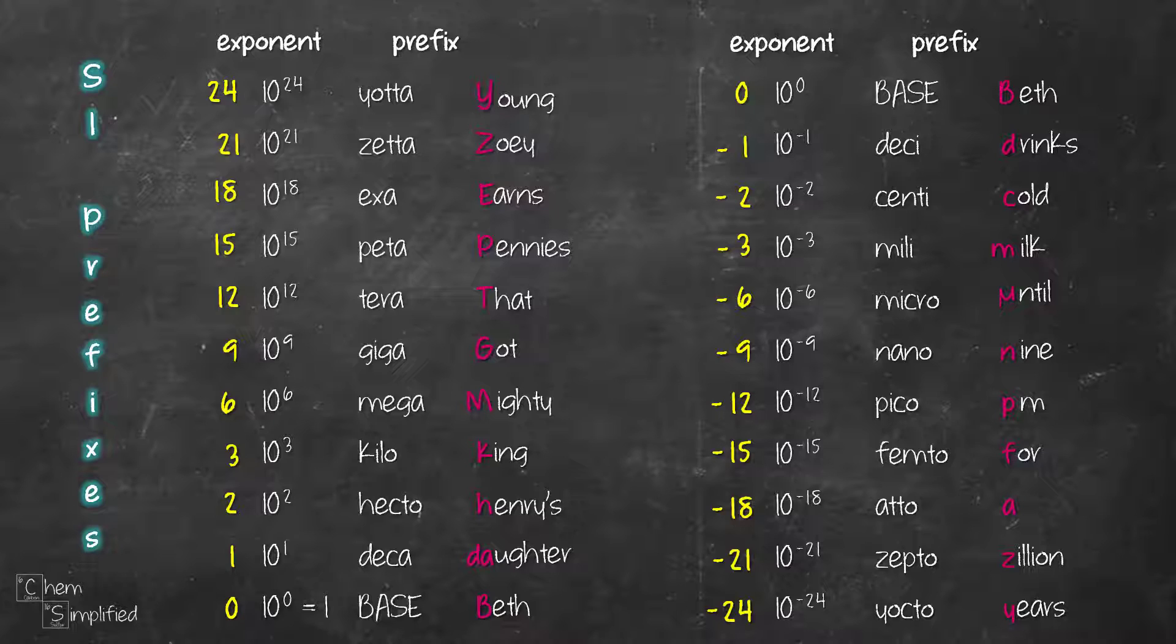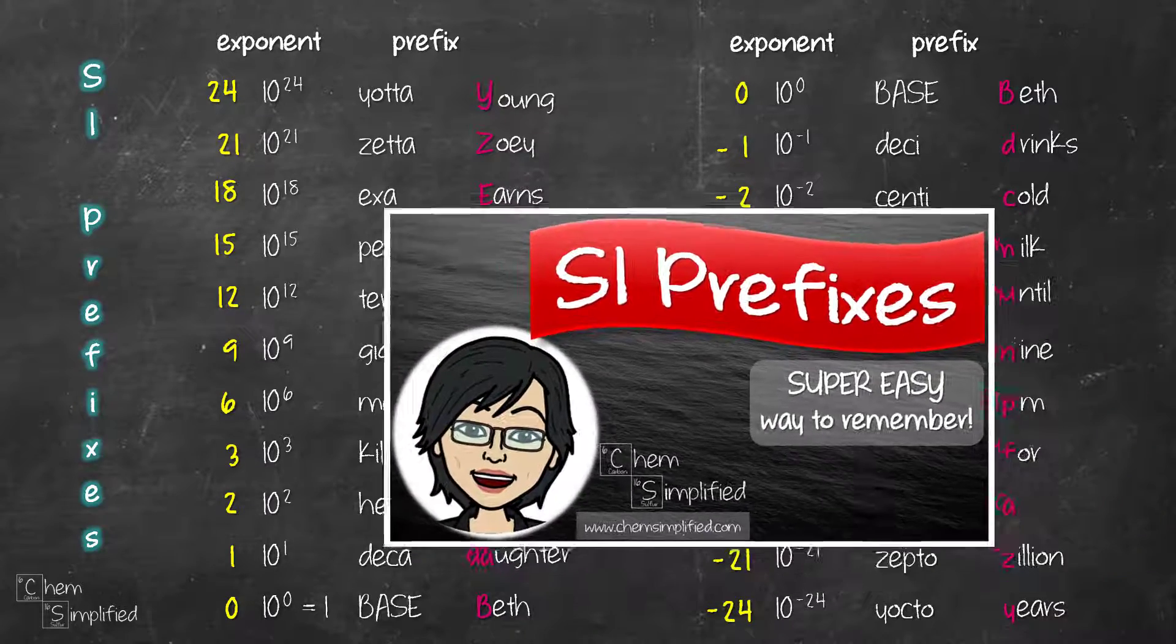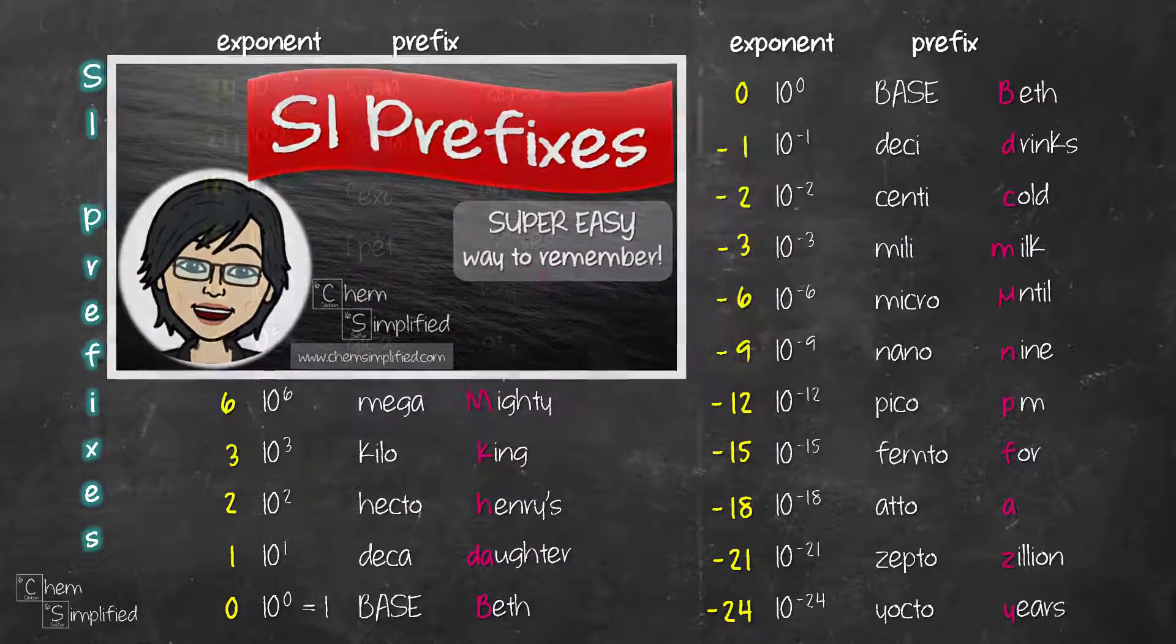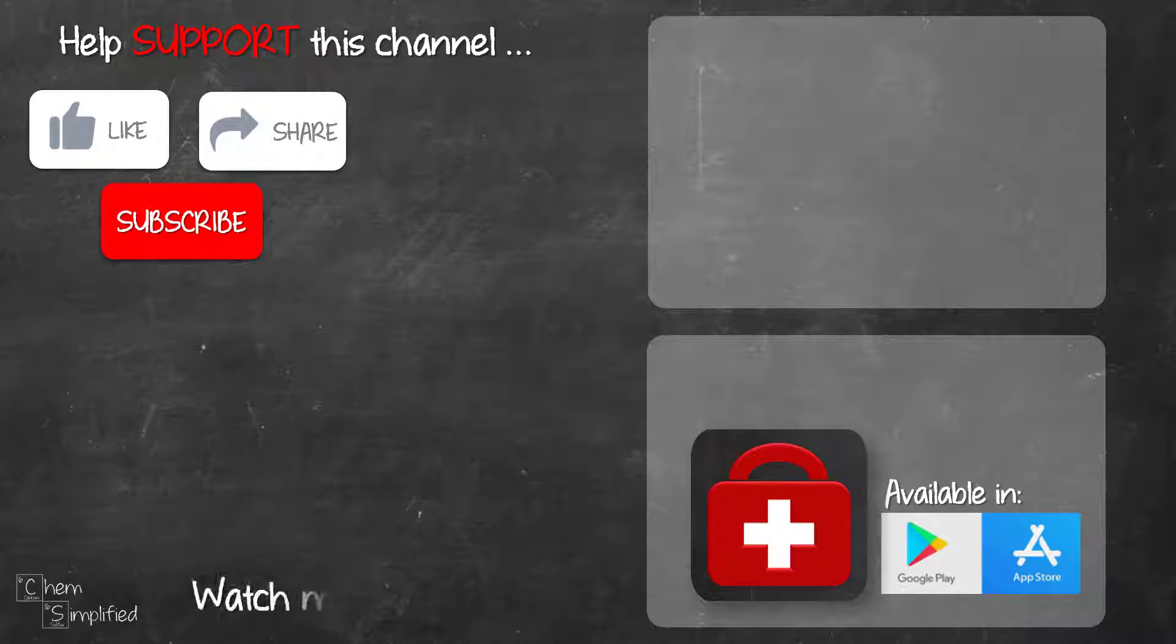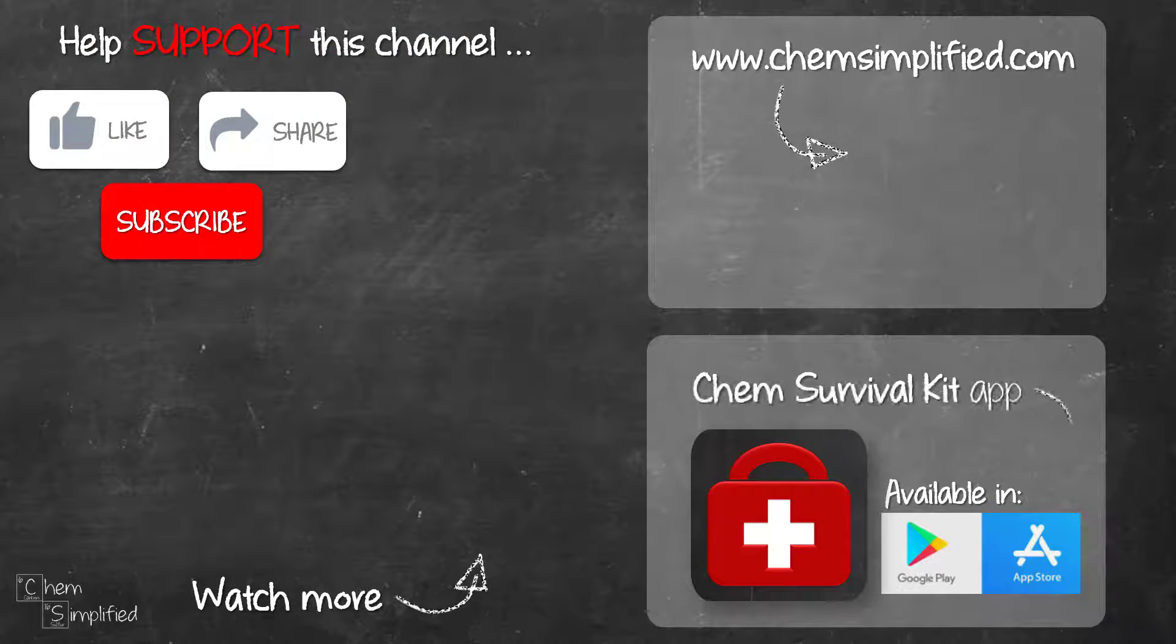If you're interested in memorizing less SI prefixes, specifically from terra all the way to pico, I have a video on that. Be sure to check the link in the description box below. Here's a video that I've handpicked for you. Do check out our app that's available in both Google Play and App Store. Thanks for watching all the way to the end. If you find this video helpful, be sure to like and share it with someone. Don't forget to subscribe and hit that bell icon so you won't miss future videos. Your support means a lot to me.